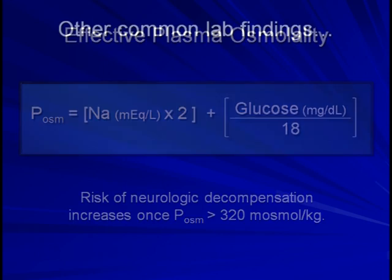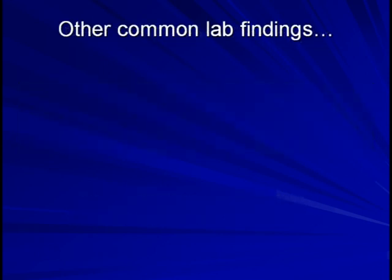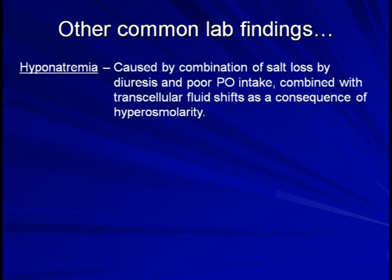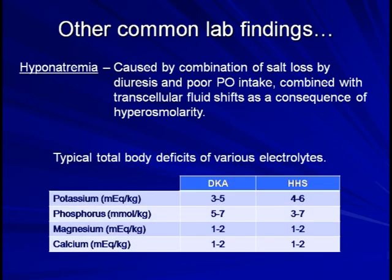There are a whole slew of additional lab abnormalities in DKA and HHS. Hyponatremia at presentation is nearly universal as a consequence of salt loss during osmotic diuresis, poor PO intake, and the transcellular shifts due to hyperosmolarity. Patients typically have total body deficits of other electrolytes as well, as listed here.